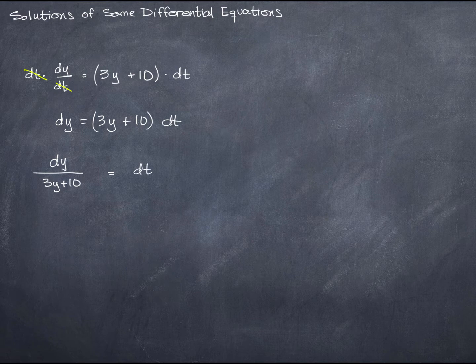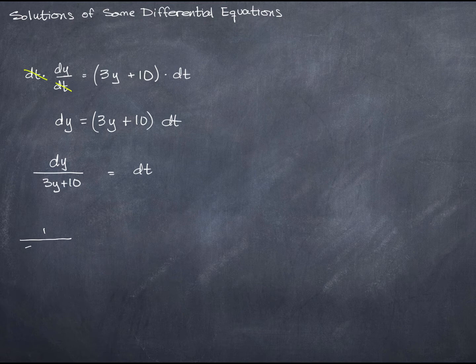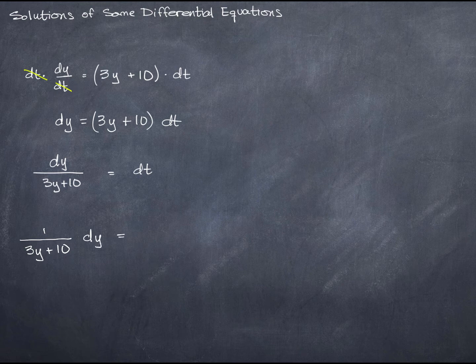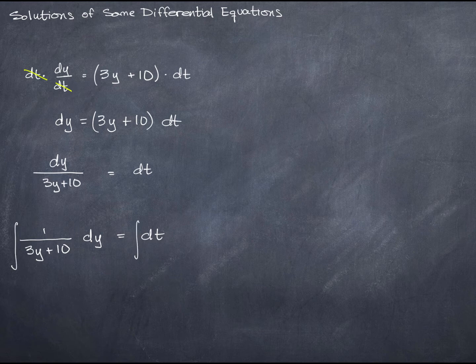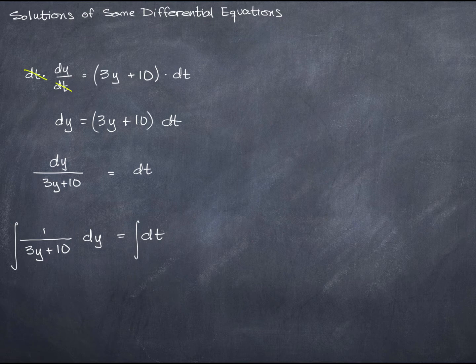Another way to write the left-hand side is 1 over 3y plus 10 times dy. So I have this equation. And now I can think of this simply as an equation of two differentials that, when I integrate both sides, will produce a solution. So just like you can differentiate both sides of an equation or take the square root of both sides of an equation, you can integrate both sides of an equation.